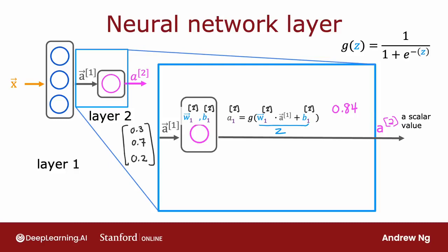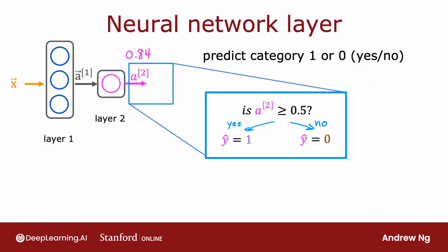To make the notation consistent, you can also add superscript square bracket twos to denote that these are the parameters and activation values associated with layer two. Once the neural network has computed a^[2], there's one final optional step: if you want a binary prediction — one or zero, is this a top seller yes or no — you can take a^[2] subscript one, which is 0.84, and threshold it at 0.5. If it's greater than 0.5 predict y-hat equals one; if less than 0.5 predict y-hat equals zero.